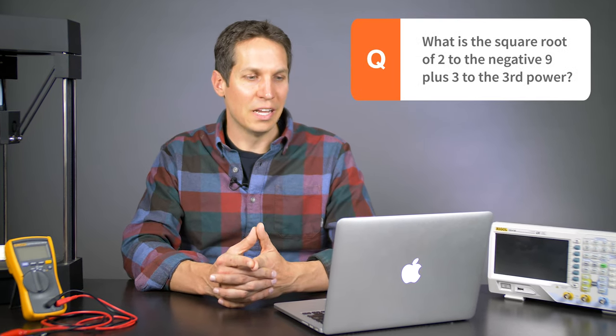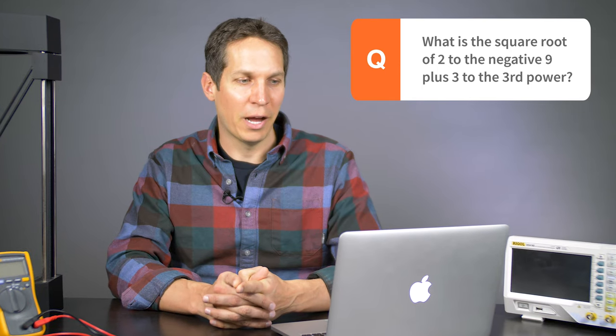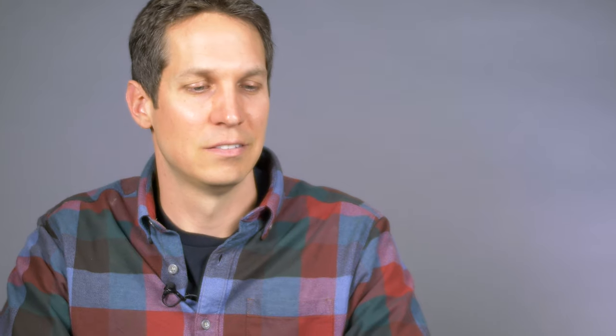What is the square root of two to the negative nine plus three to the third power? So the square root of two is 1.4 to the negative nine. I don't, that's 1.4 over. Moving on.